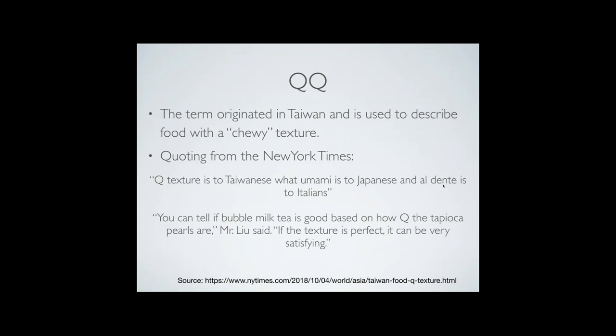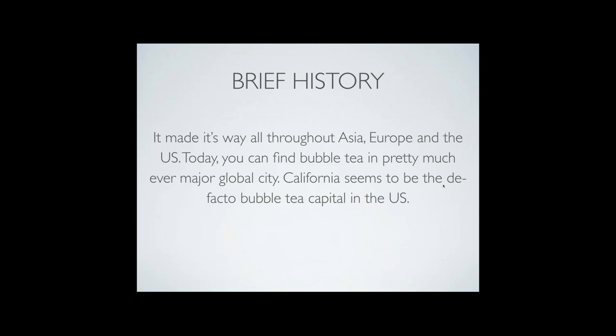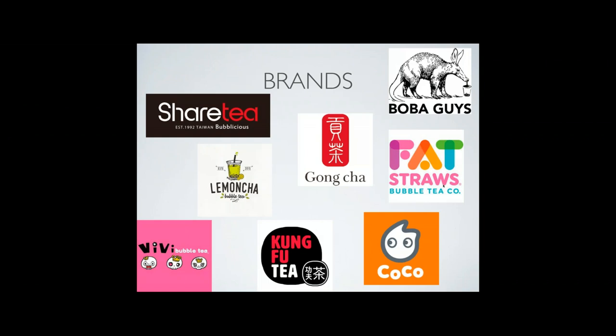A little more history: the exact origin of bubble tea is disputed, but generally folks agree it came from a Taiwanese tea house in the mid-1980s. Milk tea had been consumed in Taiwan, and the basic story goes that one day somebody had a tapioca dessert, poured it into their tea, and thought it was incredible. That's where we have bubble tea today. It's spread throughout Asia, Europe, and globally. In the US, California is probably the capital, but bubble tea shops are everywhere.